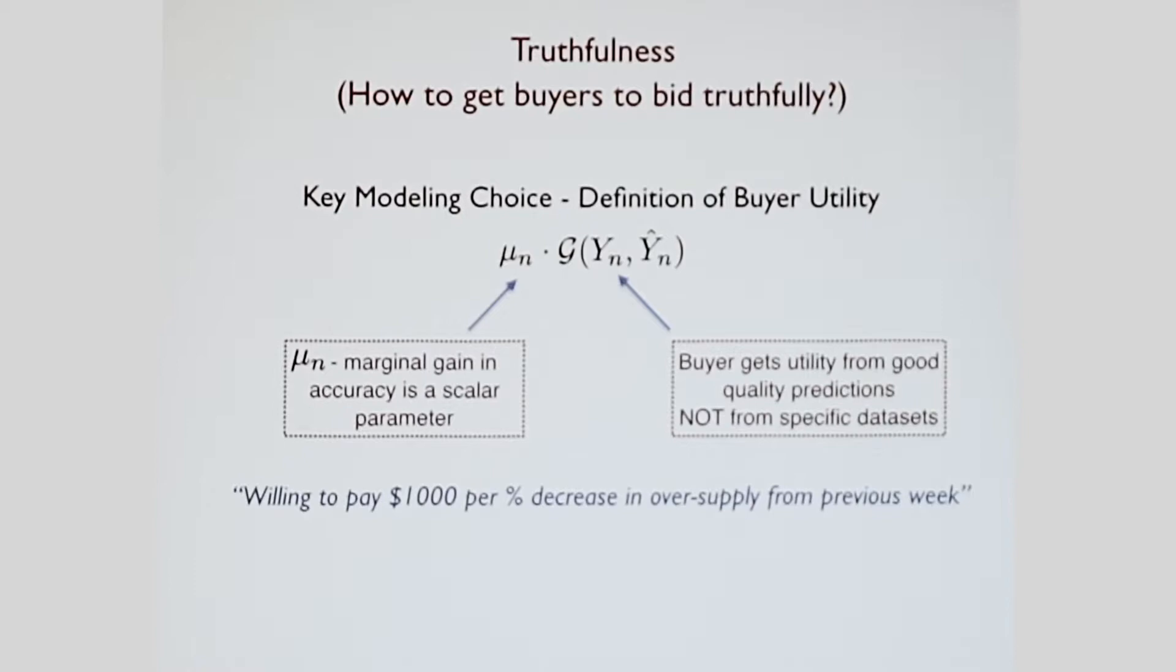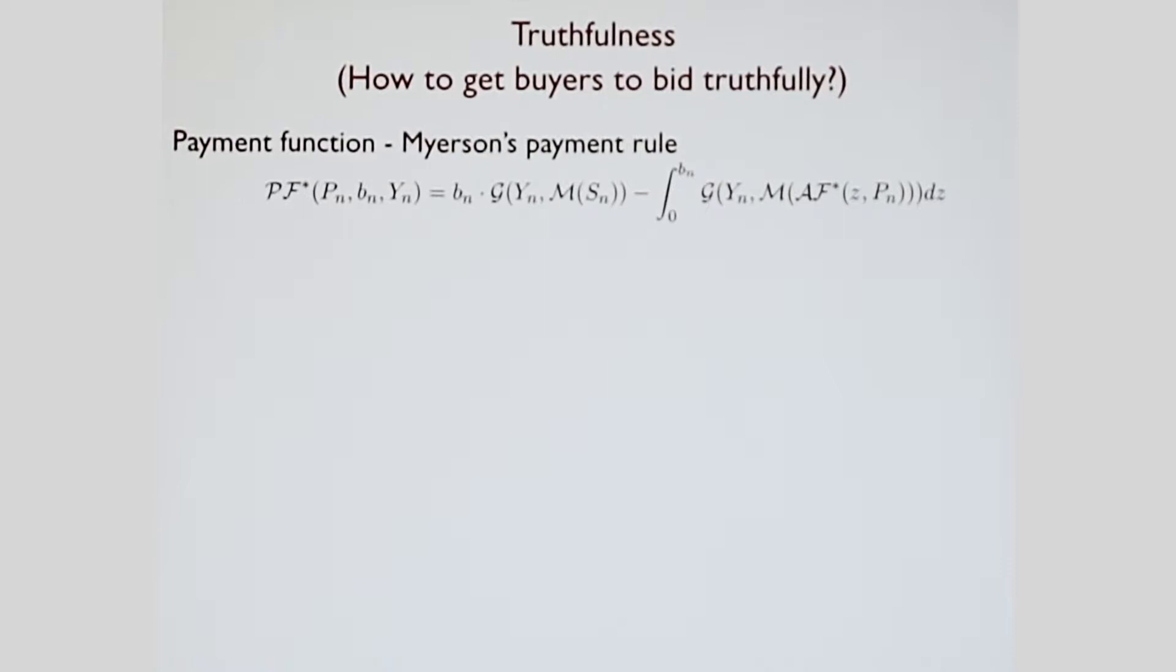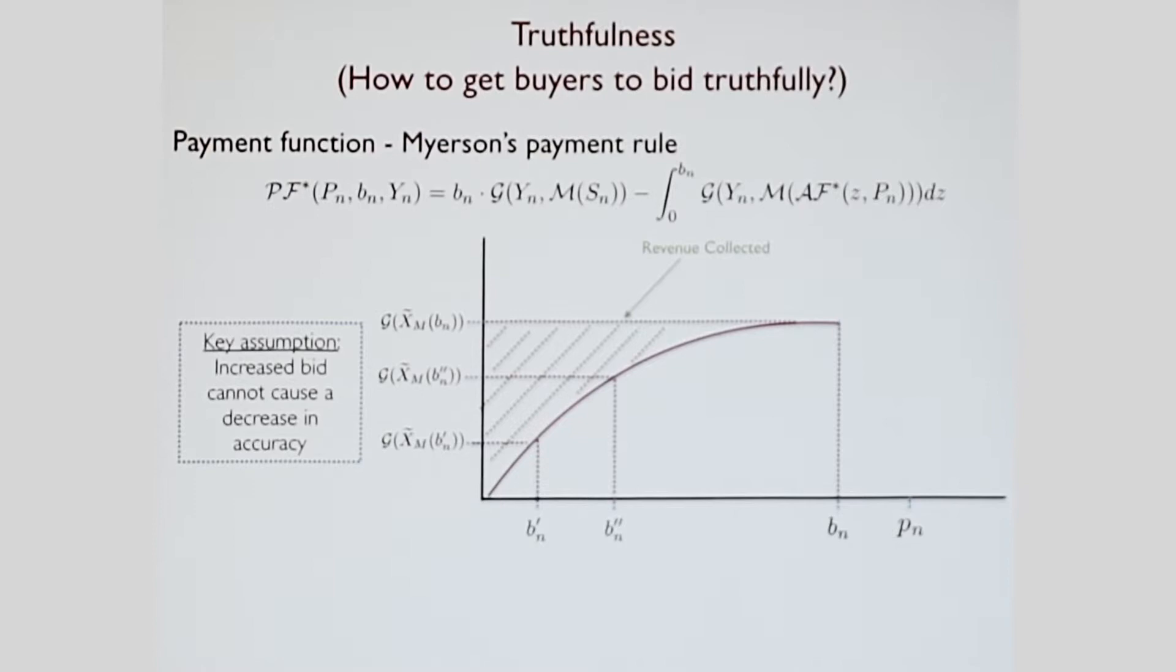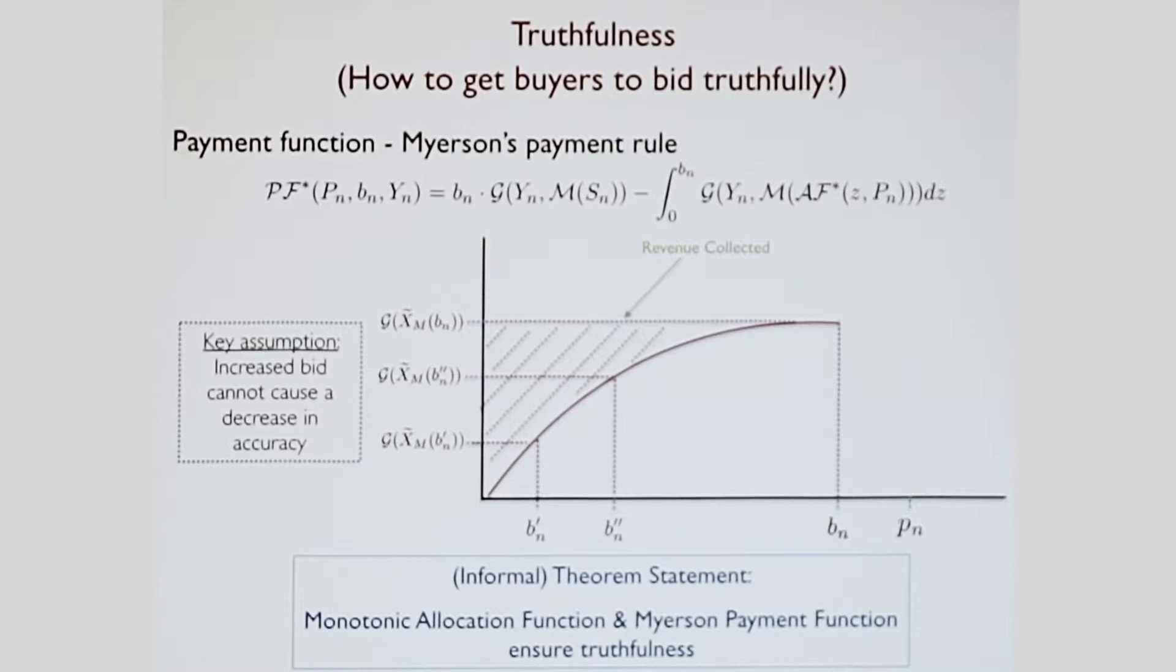If you do that, then the very famous Myerson's payment rule that has existed for the last 30, 40 years gives you what you want. It actually gives you truthfulness. As long as you say that if I bid more, I cannot get a decrease in accuracy. If I'm going to pay a thousand five hundred dollars, I should not get any less accuracy for bidding a thousand five hundred dollars. Visually for people who haven't seen how this function looks like, as I go from b n prime to b n, where b n is larger than b n prime, my gain is going up. The green area under this curve is where I'm going to collect. If you do that, that ensures truthfulness, as long as you have a monotonic allocation function.